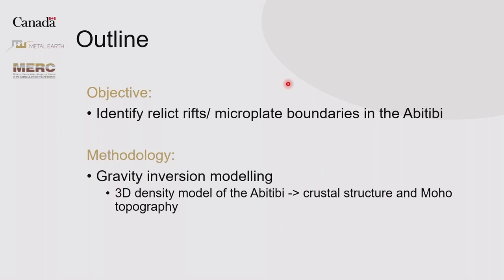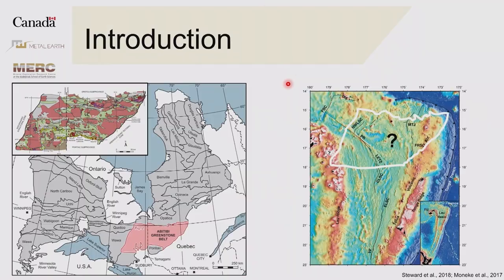The objective of the project is to use geophysics to figure out where these microplate boundaries are that Mark just talked about, doing it using inversion modeling of gravity data to produce 3D density models. From this density model we can pull out crustal structure and moho topography. Mark introduced this well already — using the Liao Basin as a case study to identify where these rifts are, then applying the same modeling methodology in the Abitibi.